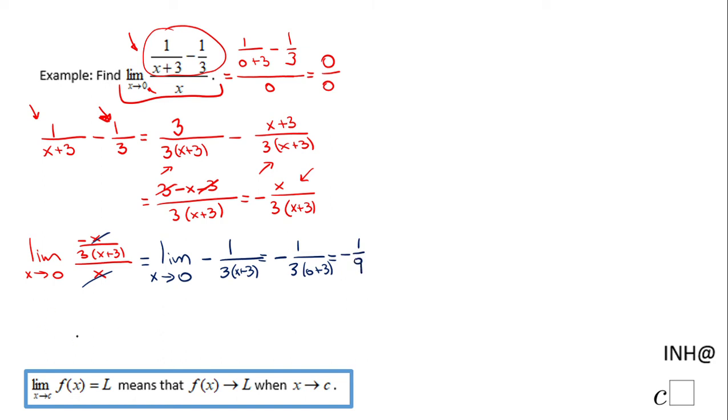So the limit we started from, limit as x approaches 0 of (1/(x+3) - 1/3)/x, is -1/9.